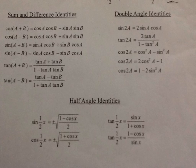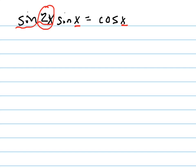And that's why we use our double angle identities. So sine 2x equals 2 sine x cosine x. So I'm going to rewrite this as 2 sine x cosine x times sine x equals cosine x.